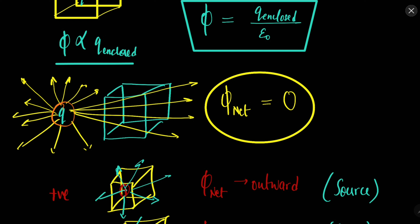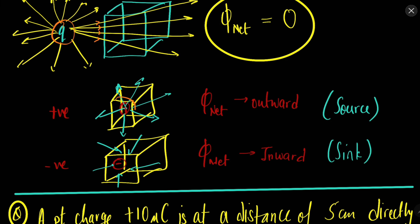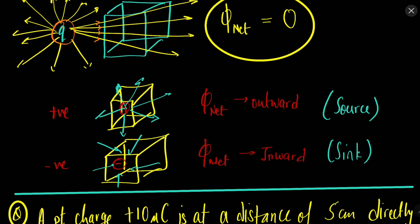If the charge is outside the conductor, the field lines will enter it, and the number of field lines entering will be equal to the number exiting, so the net flux will be zero. Gauss law states that if the charge enclosed is zero, the net flux through the conductor will be zero. If a positive charge is inside, we get net outward flux; if a negative charge is inside, we get net inward flux, because electric field lines exit positive charges and enter negative charges. Positive charge is also called the source and negative charge is called the sink.